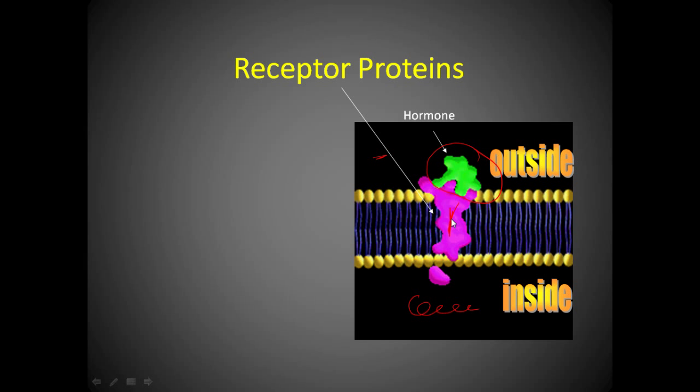This is how hormones work. We talked briefly at the beginning of the semester about the endocrine system. Hormones are secreted by glands, they travel through the bloodstream. They have to fit. Not every hormone will fit into this receptor protein. Only the ones that fit. And when they fit, then they cause changes inside the cell, and I'll give you an example of that in a bit.